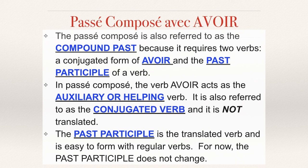Those two verbs are a helping or auxiliary verb and a past participle. Avoir is going to be our helping or auxiliary verb, and our past participle will vary based on what we're trying to say. Avoir is also known as the conjugated verb because it will change for subjects. Our past participle is our translated verb and it stays steady — the same for every subject regardless of tense or gender for now.